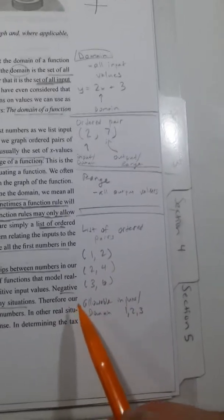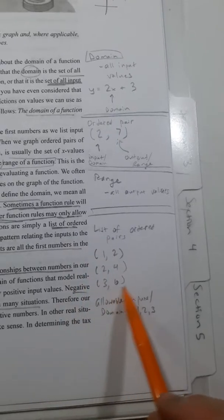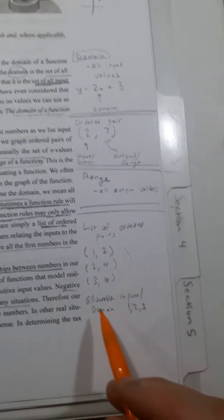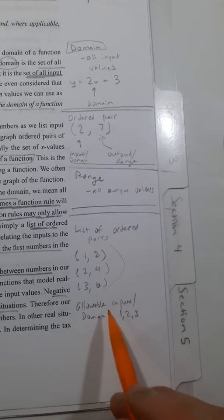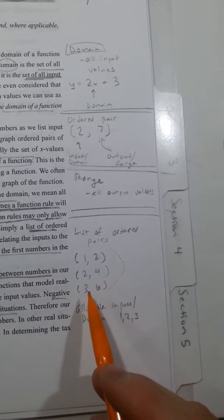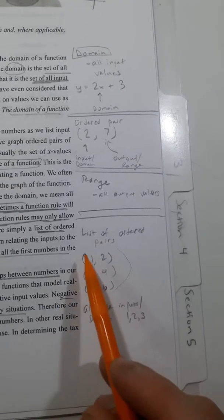And it might say, what is the range of this? And the allowable inputs for this is 1, 2, and 3. The domain is the first numbers of the ordered pairs.